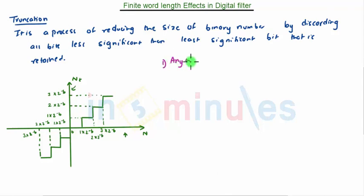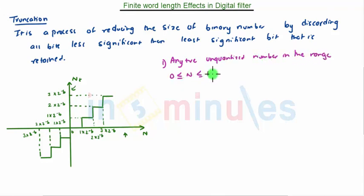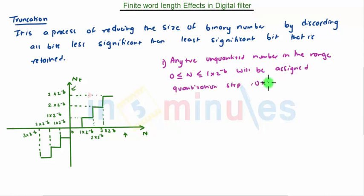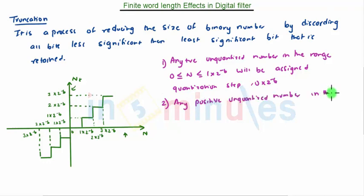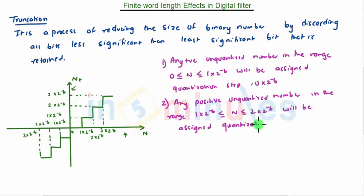First, any positive unquantized number in the range 0 to 1×2^(−b) will be assigned quantization step 0×2^(−b). Similarly, any positive unquantized number in the range 1×2^(−b) to 2×2^(−b) will be assigned quantization step 1×2^(−b), and this goes on.